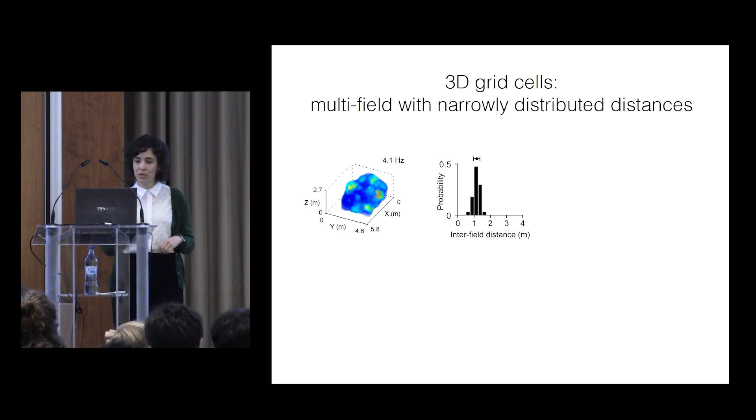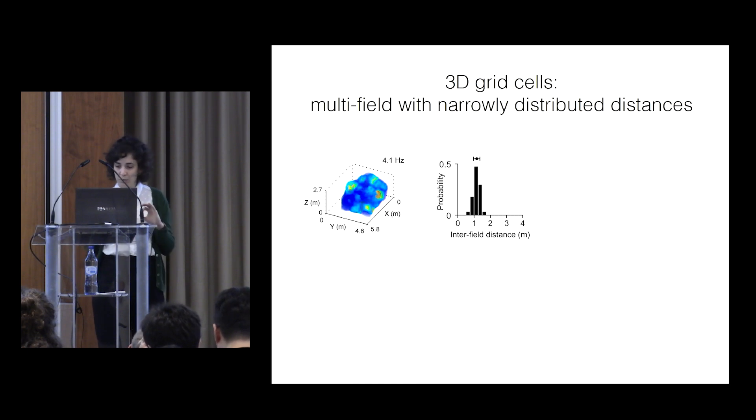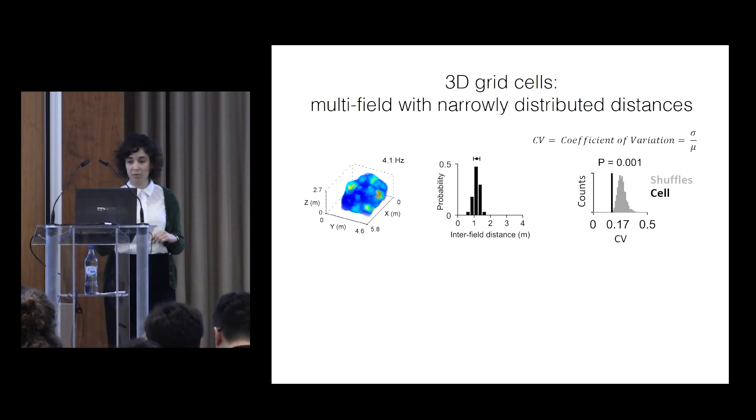And here, in this example cell, you can see all the distances of this cell distributed here. You see that the distribution is pretty narrow. To quantify how narrow this distribution is, we compute the coefficient of variation of it.